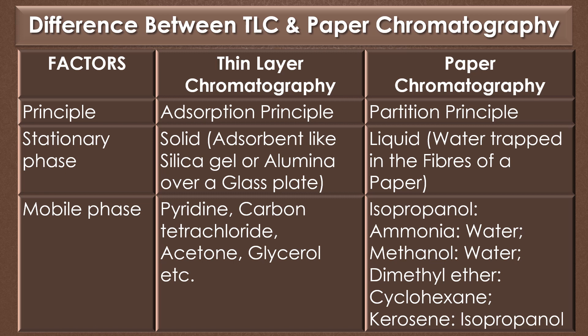Next, the stationary phase. The stationary phase used in thin layer chromatography is solid — that is, the absorbent like silica gel or alumina over a glass plate. The stationary phase used in paper chromatography is liquid — that is, the water trapped in the fibers of a paper.